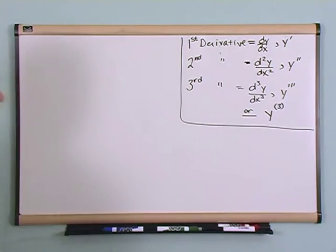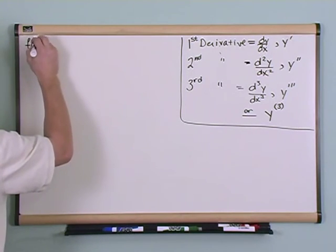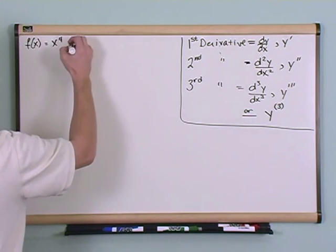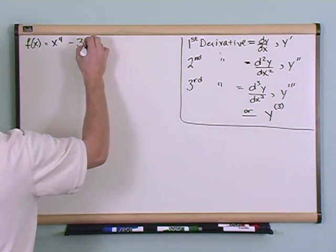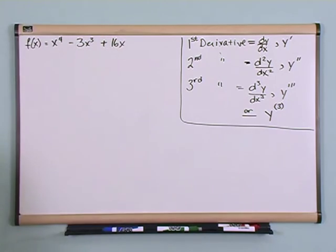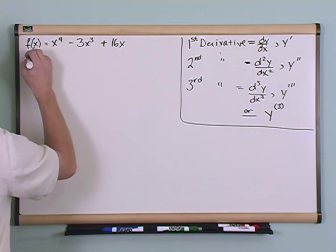And we're going to work a few problems to kind of illustrate this in the most general sense. So what if you have f is equal to x to the fourth power minus 3x to the third power plus 16x, and the question is find the first and the second derivative of this function.